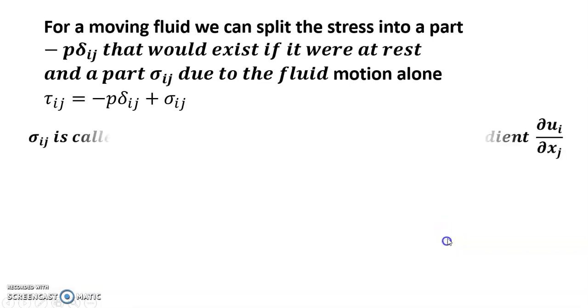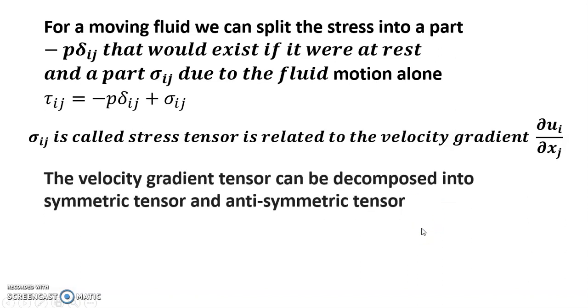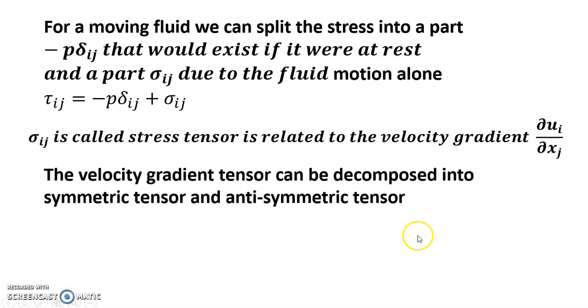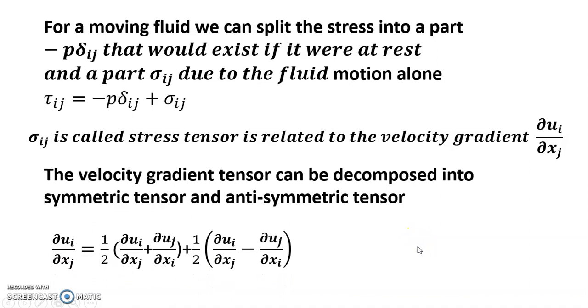Tau_ij equals minus p delta_ij plus sigma_ij. Sigma_ij is called the stress tensor and is related to the velocity gradient del u_i divided by del x_j. The velocity gradient tensor can be decomposed into a symmetric tensor and an anti-symmetric tensor.